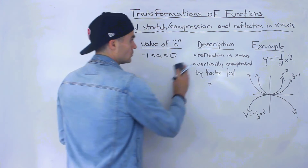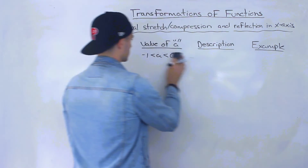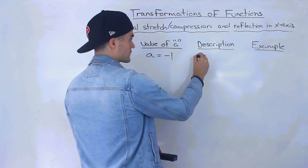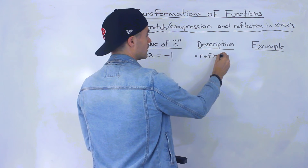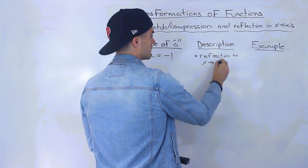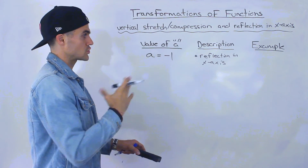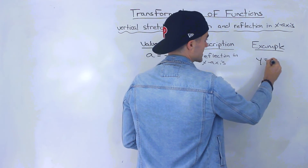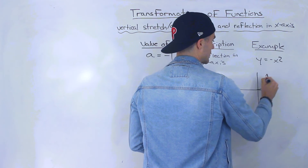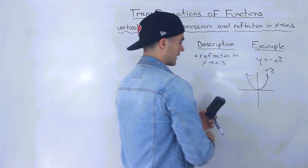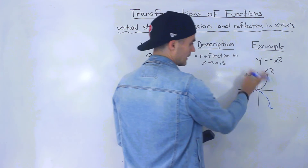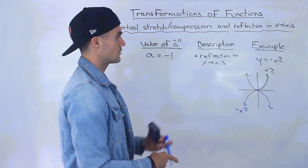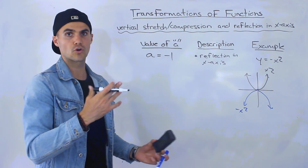If a equals negative 1, there is a transformation but it's only a reflection in the x-axis — no vertical stretch or compression, just like positive 1 had no transformation. So y equals negative x squared takes the x squared parabola and simply reflects it in the x-axis, pointing it downward.